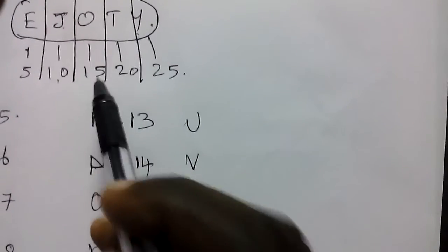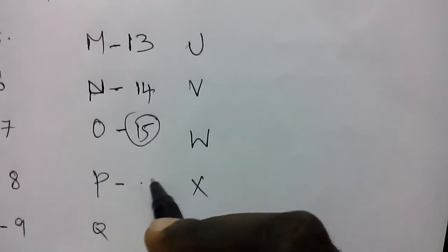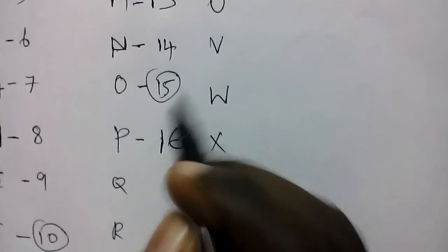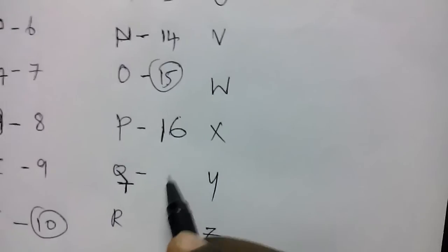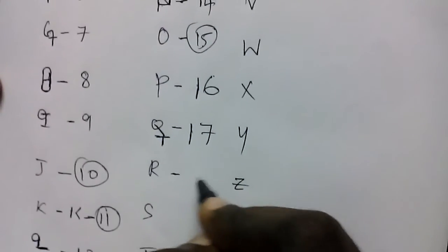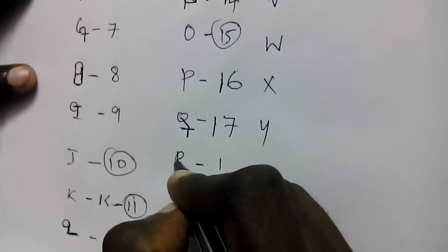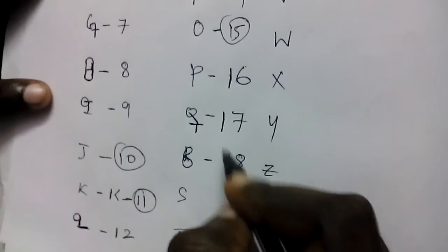O is already in the E J O T Y formula — O is 15. For P: P already looks like an inverted 6 form, so add 1 to 15 — P is 16. For Q: extend the tail of Q and add a middle line so it looks like 7; add 1 to make 17 — Q is 17. For R: it has a circle on top; add a bottom curve so it looks like 18 — R is 18.